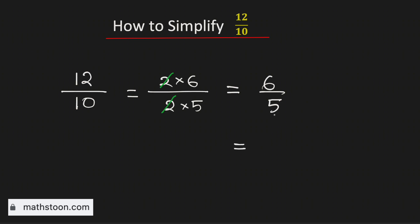We know that 5 goes into 6 by 1 time, and the remainder is 1, and we need to divide it by 5. Therefore, 12 over 10 as a mixed fraction is equal to 1 and 1 fifth, and this is our final answer.